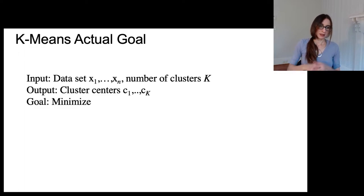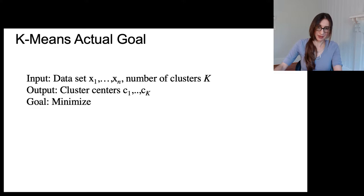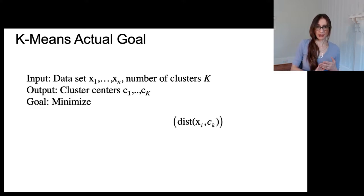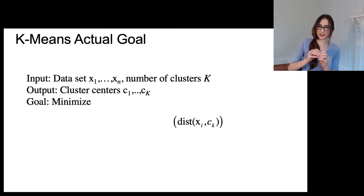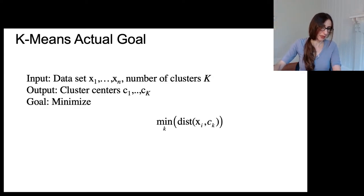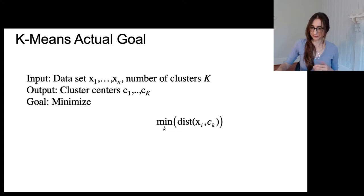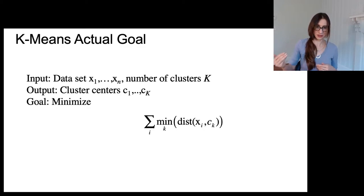The input is the data and the number of clusters, which we assume we know in advance, and the output is the cluster centers. The goal is to minimize an objective related to the distance between each data point i and its cluster center c_k. We only care about the distance to the nearest cluster center — that's the one the point is assigned to. So we include a min, looking only at the distance between point i and its nearest cluster center. The total cost is the sum over all data points of those distances to the nearest cluster center. That is the cost that k-means is minimizing.